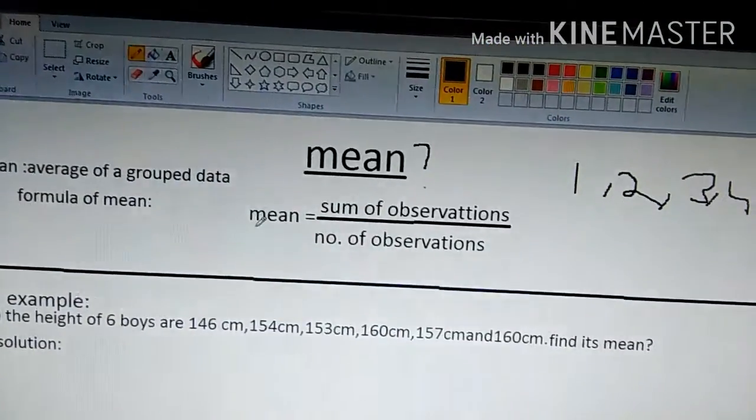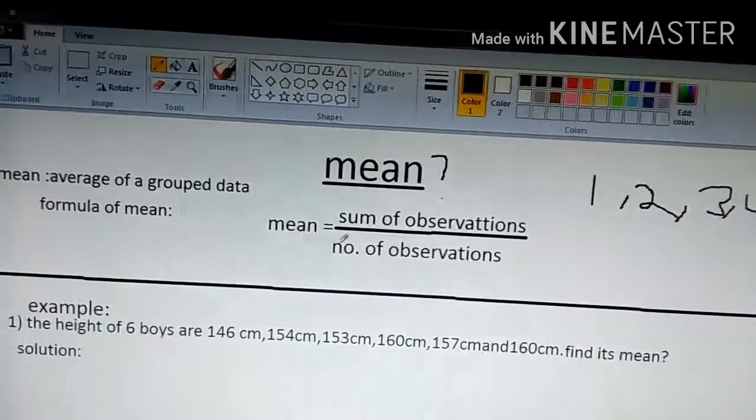The formula for finding the mean is sum of observations by number of observations.